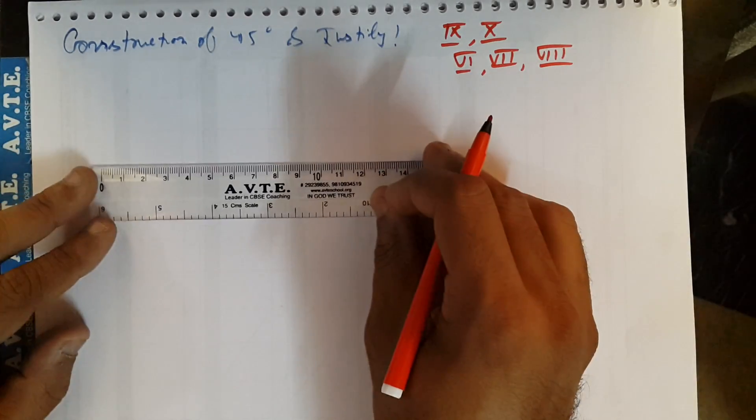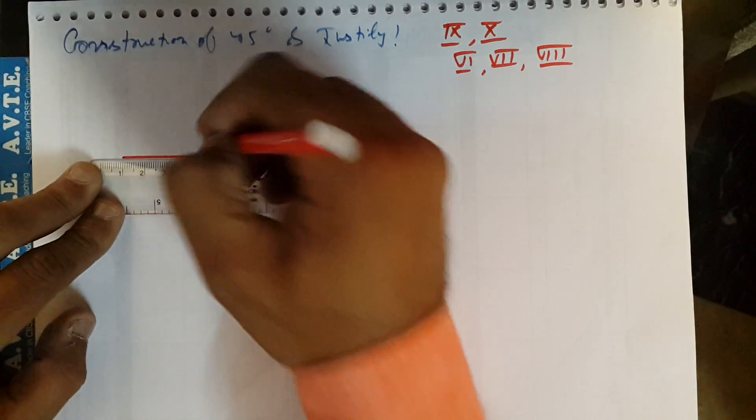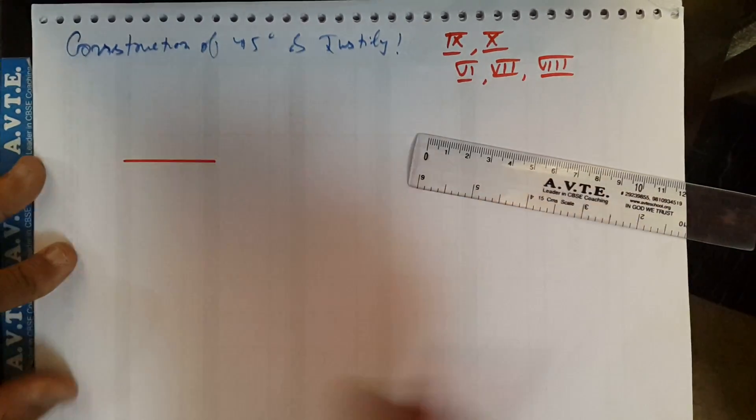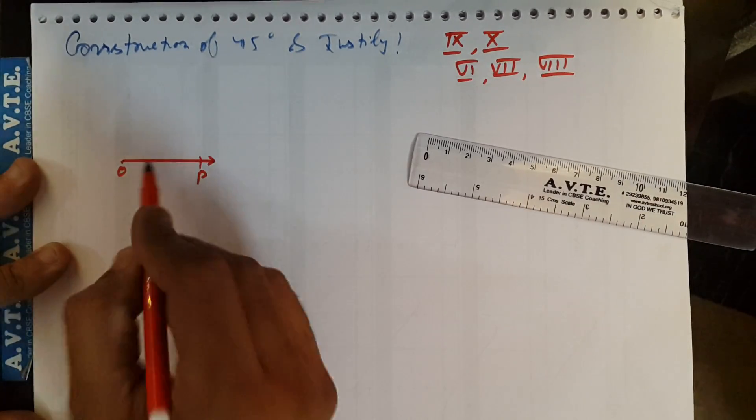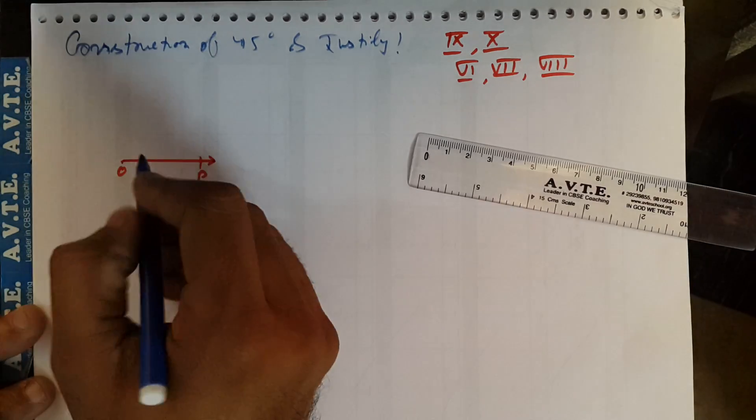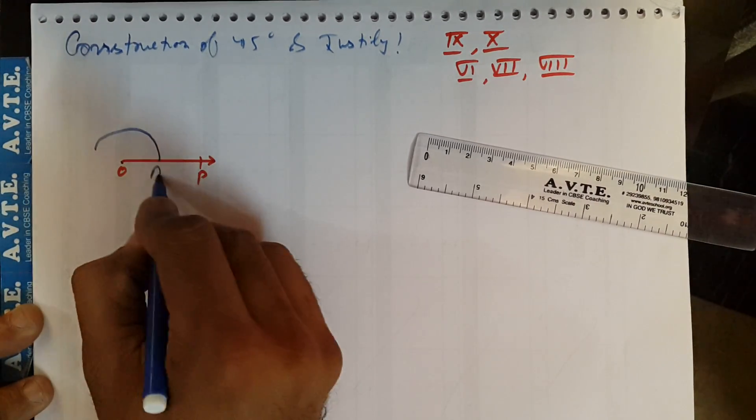Here you go. I'm just giving you the rough idea. You draw an arc, name it OP. You take a suitable radius from O, OA.